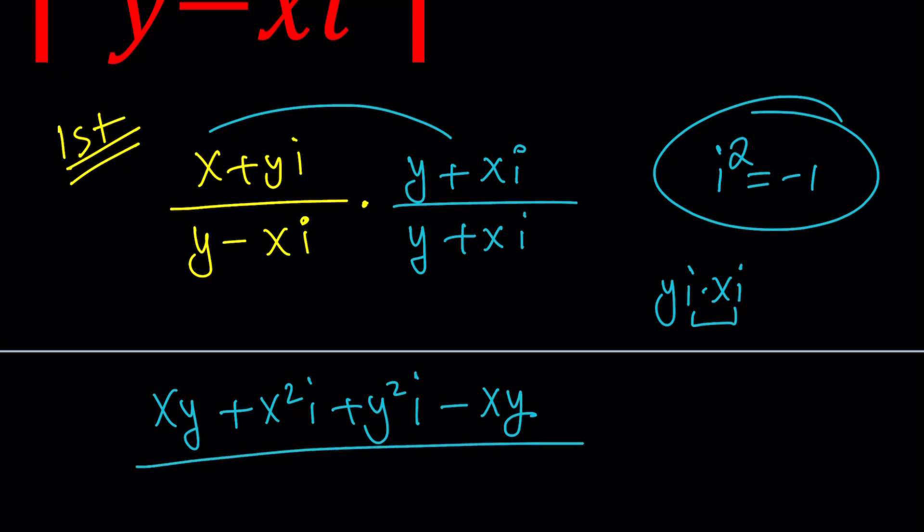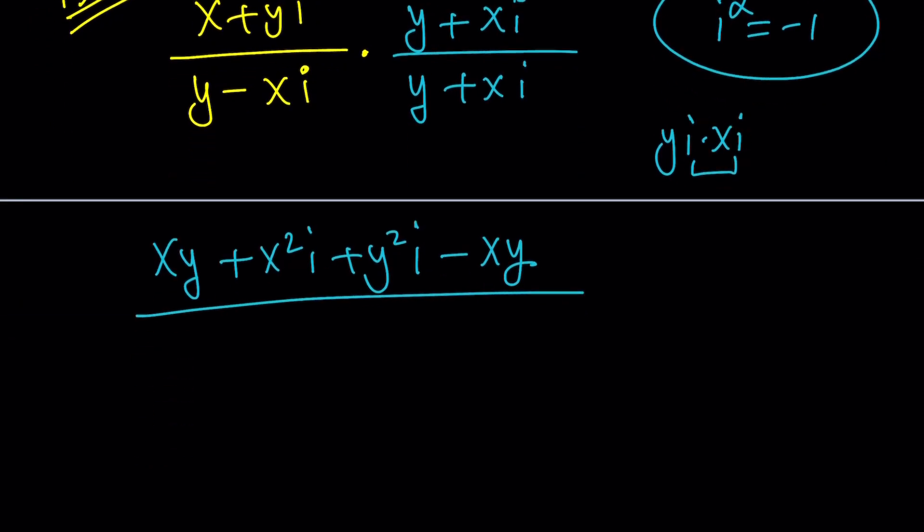Now this is going to be divided by the bottom. The bottom is the product of two conjugates, and remember, with two conjugates, the product is a real number. Again, that's in the lecture notes, and in this case it will be y squared plus x squared. The real part squared plus the imaginary part squared, which is also the square of the absolute value. Let's go ahead and rearrange these terms.